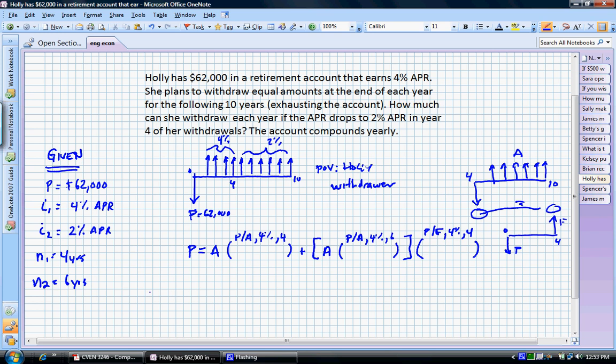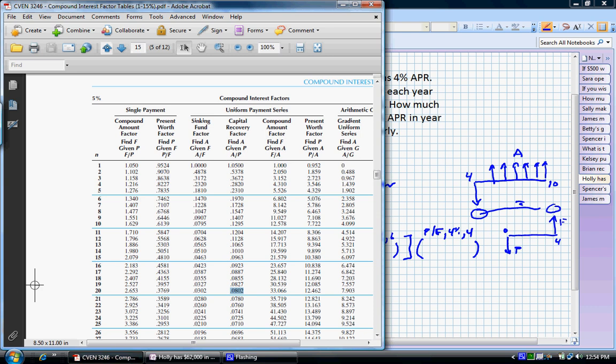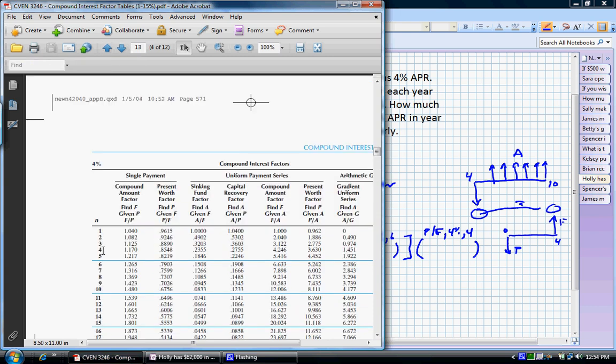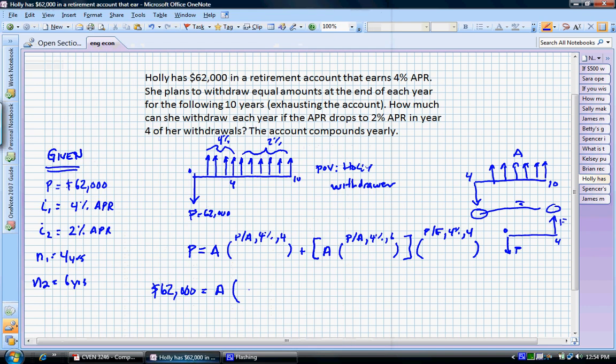So let's put this all in here really quickly. We have 62,000 is equal to A, and we're going to multiply that by the P/A factor, 4%, and four years. Let's go to the 4% table, look at four years. We need the P/A in four years. That gives us 3.630. We're going to add that to A. Remember, A is still our unknown. P/A, 4%, and six. You'll notice I have a bit of an error here. I didn't account for that second interest rate. This is 2%. So there was an error. So if you caught that, kudos.